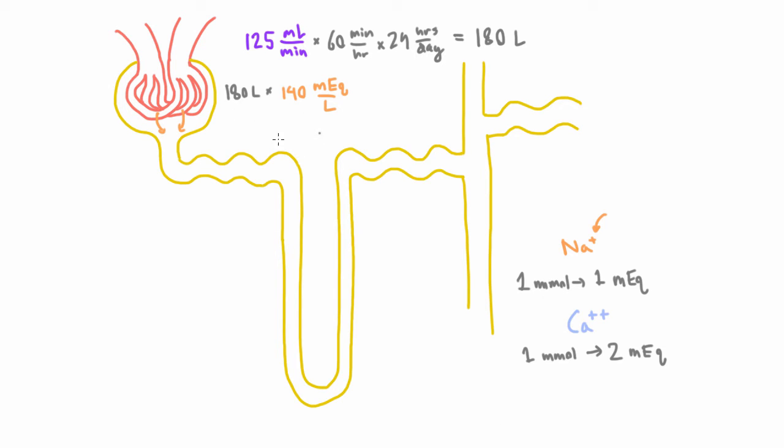So back to what we were calculating, the amount of sodium that you're filtering every day is going to be equal to this. And so this works out to something like 25,000 milliequivalents. And we said that milliequivalent is millimoles, so 25,000 milliequivalents is like 25 moles.